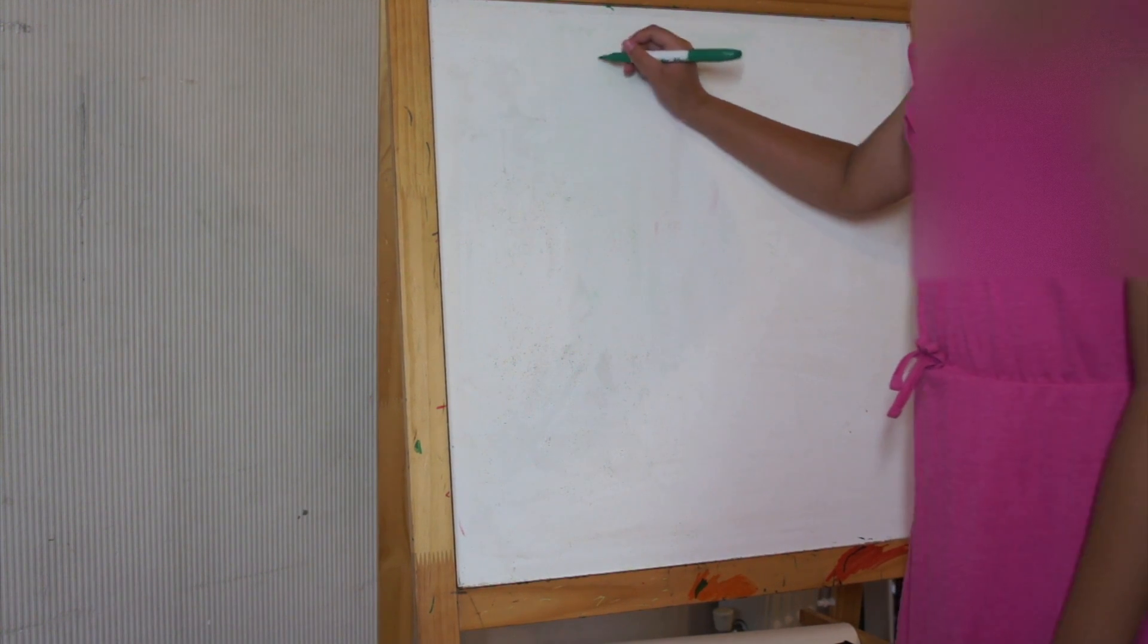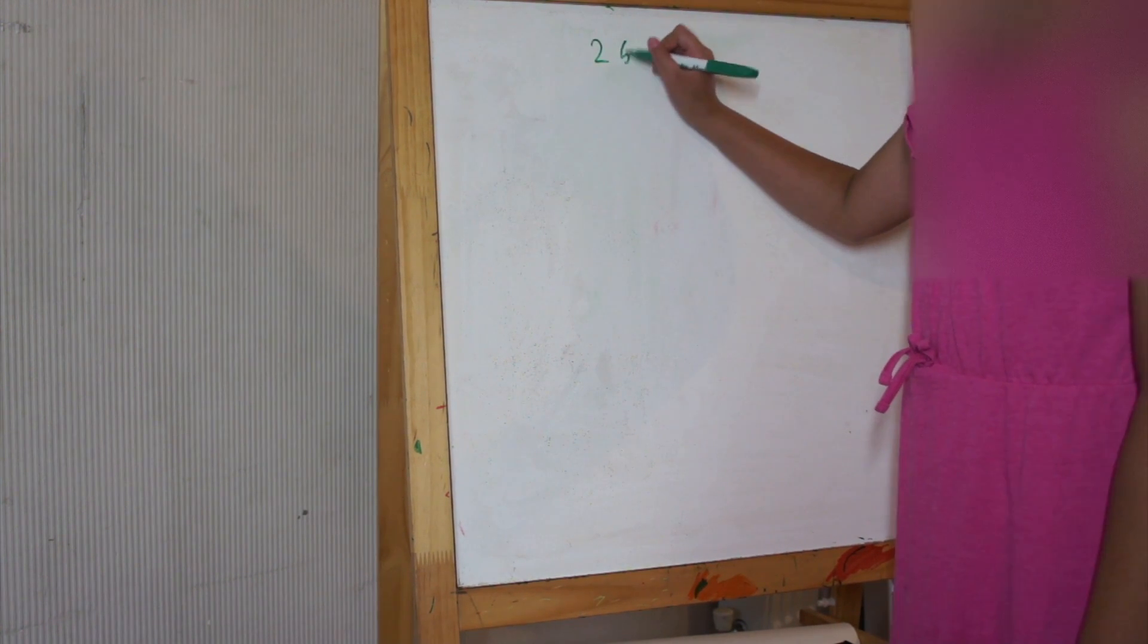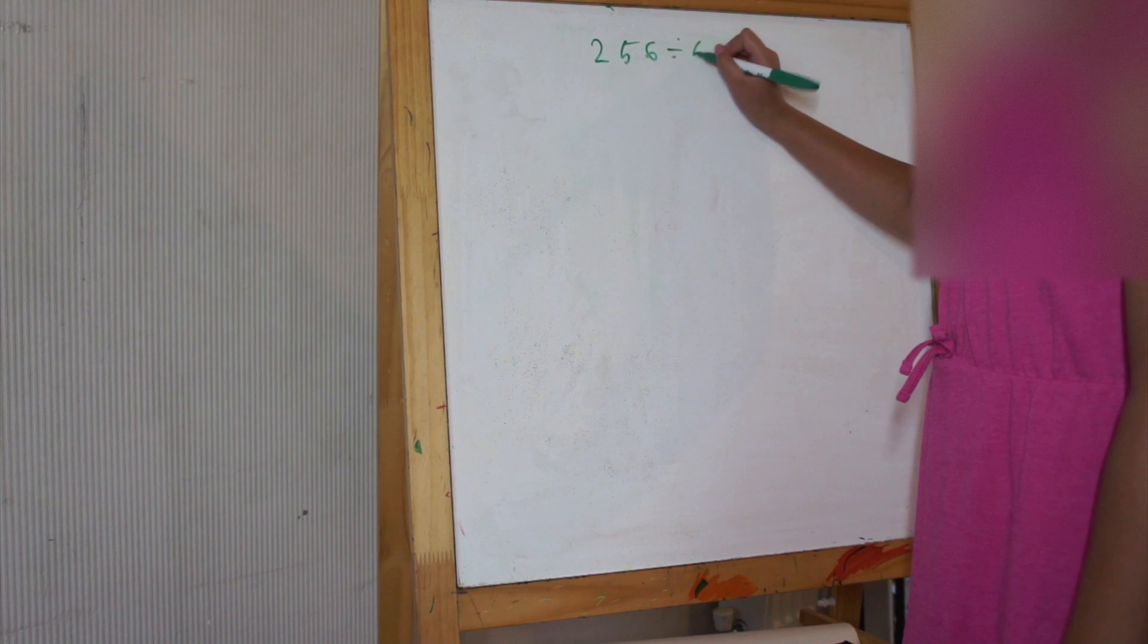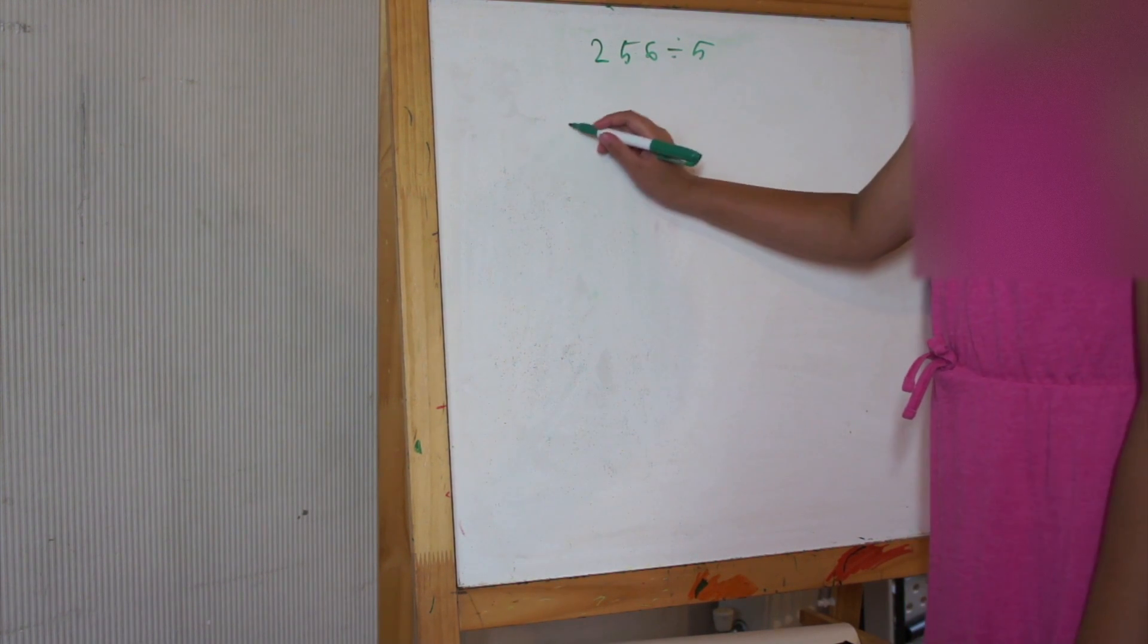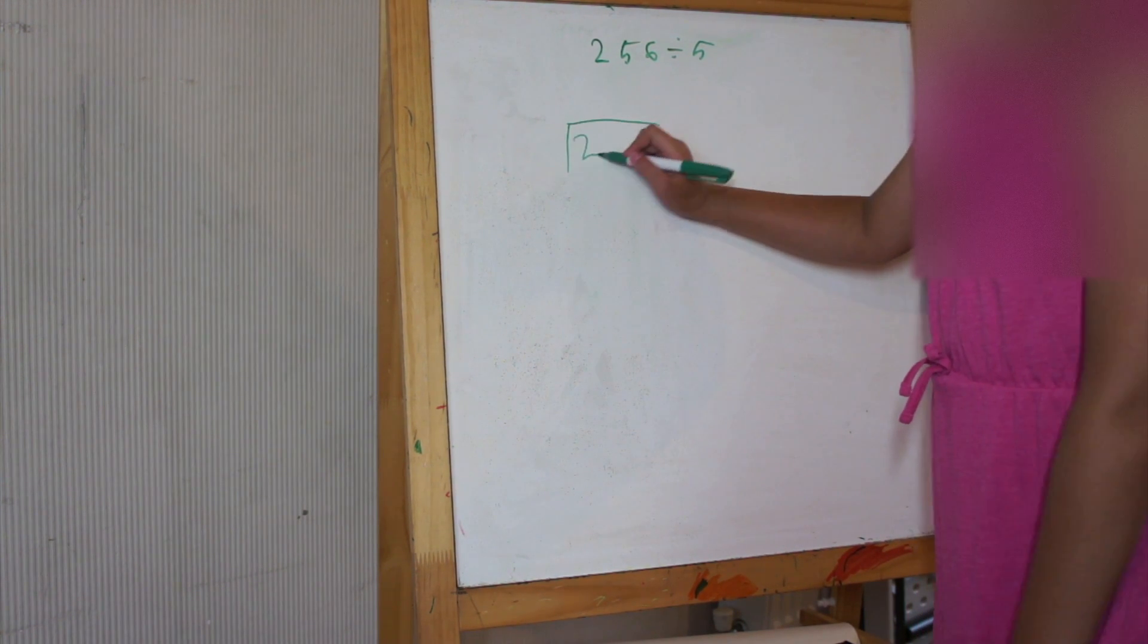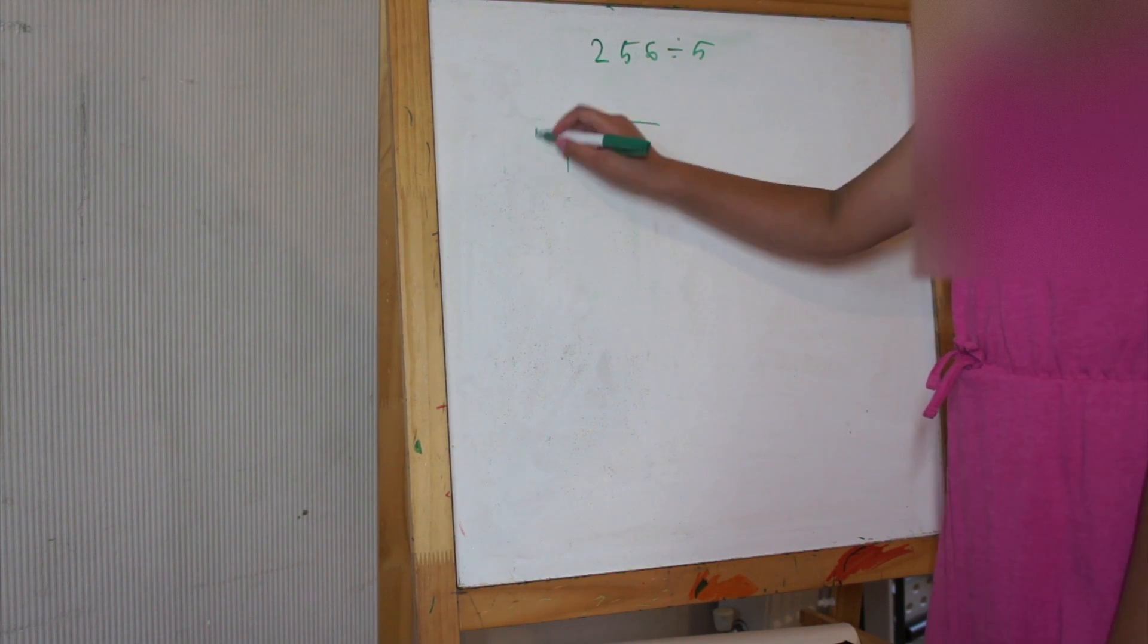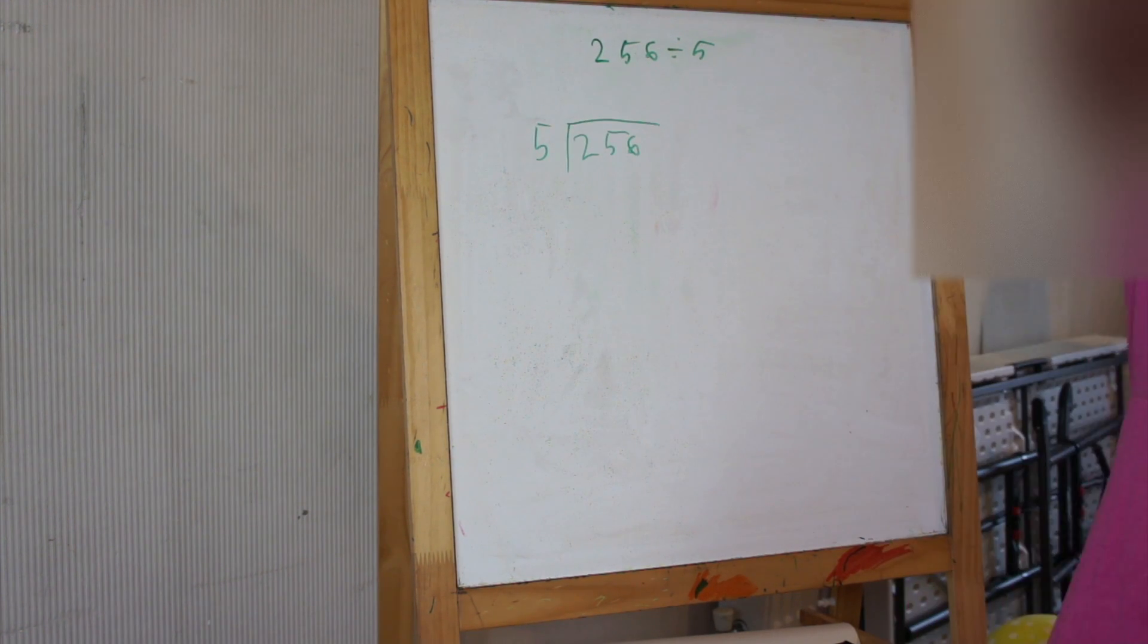So, we have 256 divided by 5. Some of you may know how to do this because of my other video yesterday, but I'm going to teach you all over again.